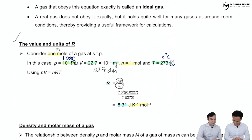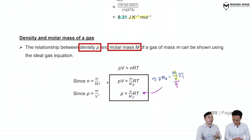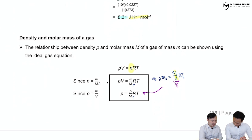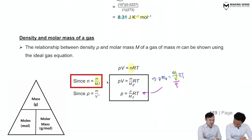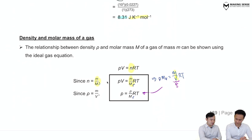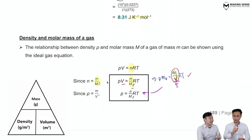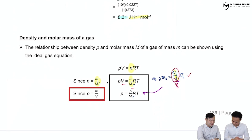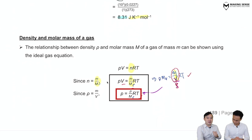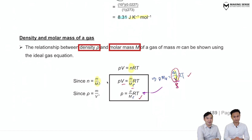For a more advanced form, we can modify the ideal gas equation by replacing n with mass/molar mass (m/Mᵣ). After rearranging — moving Mᵣ to the left and V to the denominator — the fraction mass/volume is recognized as the density of the gas, denoted by rho (ρ). After manipulation, you arrive at an equation that incorporates both molar mass and density of the gas, which is still the ideal gas equation in a different form.